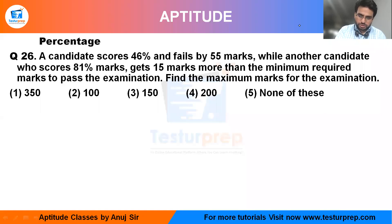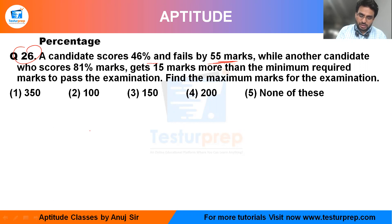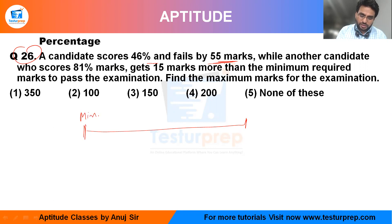Hello, this is question number 26. A candidate scored 46 percent and failed by 55 marks. Let me use a marks line — this represents the minimum marks required, or the passing marks. This is zero percent on one end and 100 percent as the maximum on the other.